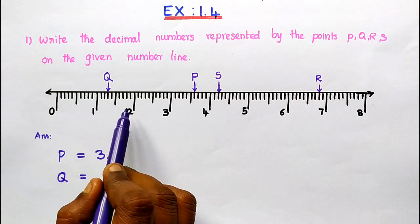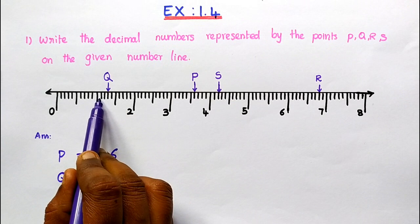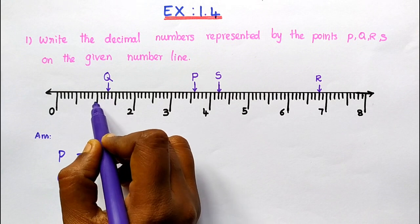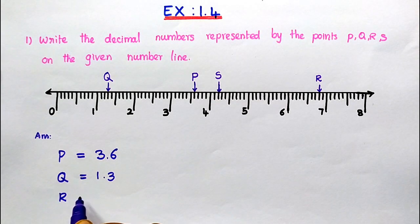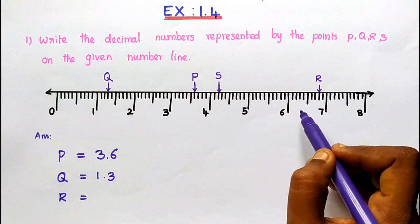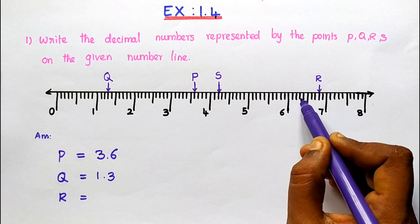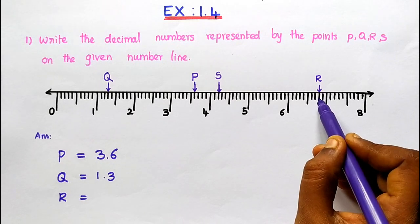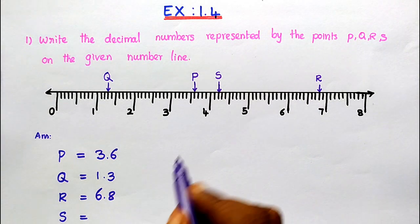Q lies between 1 and 2. It denotes the third decimal part, so Q is 1.3. Next, R. What number does R denote? That is in between 6 and 7: 6.1, 6.2, 6.3, 6.4, 6.5, 6.6, 6.7, 6.8. That is R — 6.8. Next, S.